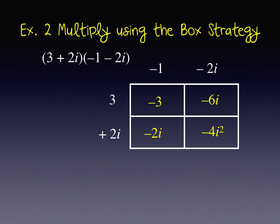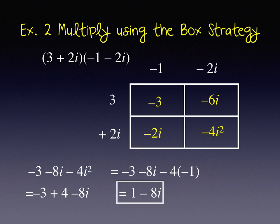Notice along the diagonal are the imaginary parts. So negative 6i minus 2i is negative 8i. And now I'm noticing negative 4i squared can be written as an integer because i squared is negative 1. So I have negative 3 plus 4 minus 8i, or 1 minus 8i.